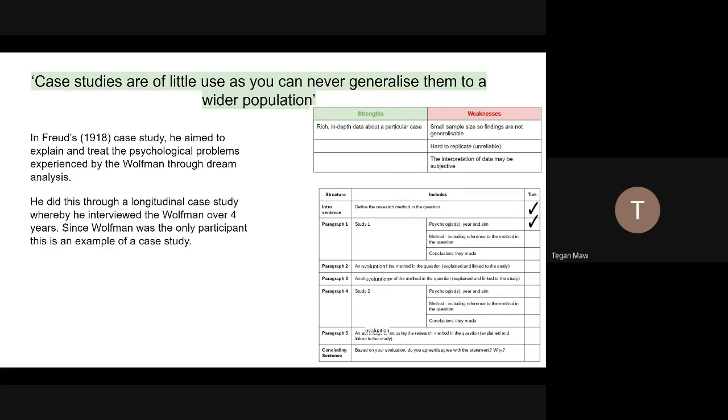The second part then, talking about the method, including a reference to the research method in the question. So he did this through a longitudinal case study whereby he interviewed the Wolfman over four years. Since Wolfman was the only participant, this is an example of a case study. I've emphasised the fact that that is a case study because that is what the question is about.